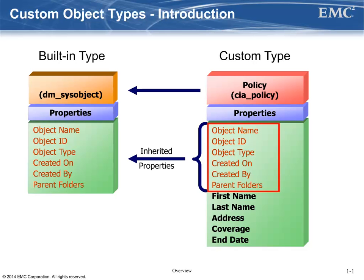object ID, object type, created on, created by, parent folders, keywords, etc. The built-in object types are very useful, but sometimes they don't contain the specific properties that you need. Luckily, you can easily extend the existing object types and add your own custom properties.